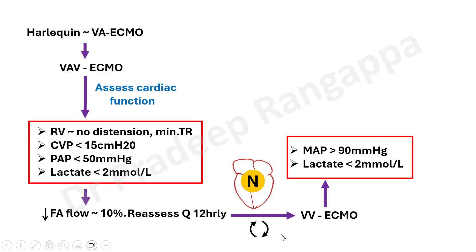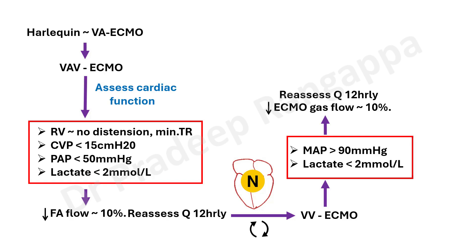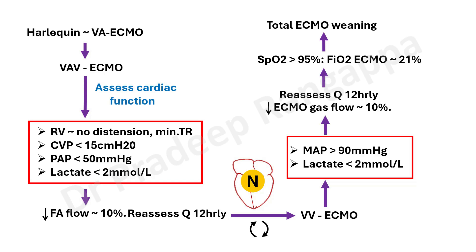After converting to VV ECMO, ensure hemodynamics and microcirculation are good. Then reduce ECMO gas flow by 10% and reassess every 12 hours. If saturations are improving and greater than 95% with ECMO FiO2 at around 21%, the lungs have improved and you can proceed with permanent ECMO weaning. This is the algorithm: from VA ECMO to hybrid VAV ECMO, then to VV ECMO, and finally weaning off ECMO when lung function improves — a conceptual overview of differential hypoxemia in eCPR or VA ECMO.